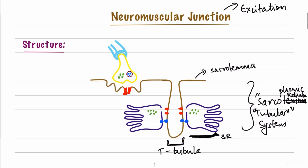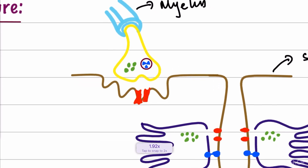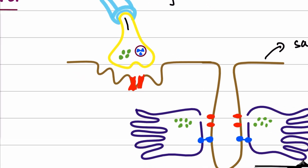At the nerve ending, we have the axon with the myelin sheath. The nerve fiber becomes unmyelinated at the synaptic junction. When an action potential reaches the nerve ending, calcium channels open and there is an influx of calcium molecules at the nerve ending or synaptic region. This calcium causes vesicles containing acetylcholine to undergo exocytosis.